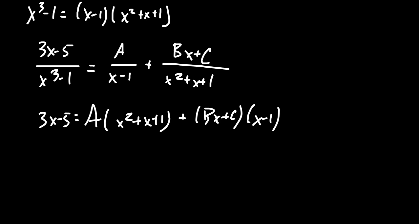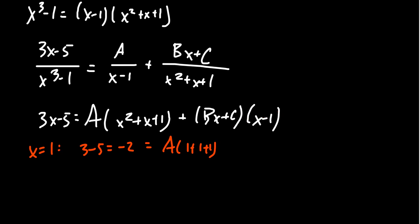Are there cool values we can choose to annihilate some things? We notice we could take x = 1. If we do that, we get 3 - 5 = -2 on the left. On the right, we get A times (1 + 1 + 1), and that second term gets annihilated. So -2 = 3A, and therefore A equals -2/3. That's the only root we could easily use, because the other two roots — the roots of x² + x + 1 — are non-real complex numbers.